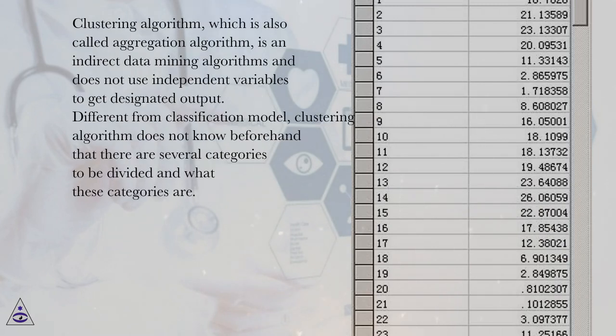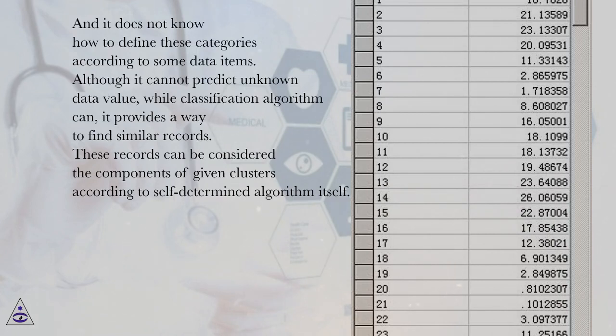Clustering algorithm, which is also called aggregation algorithm, is an indirect data mining algorithm and does not use independent variables to get designated output. Different from classification model, clustering algorithm does not know beforehand that there are several categories to be divided or what these categories are. And it does not know how to define these categories according to some data items. Although it cannot predict unknown data value, while classification algorithm can, it provides a way to find similar records. These records can be considered the components of given clusters according to self-determined algorithm itself.